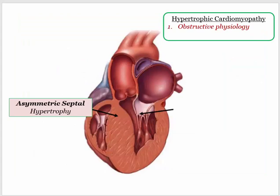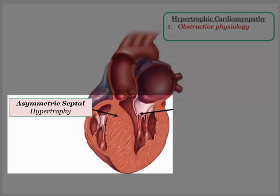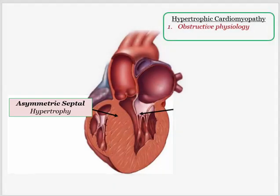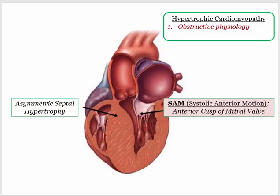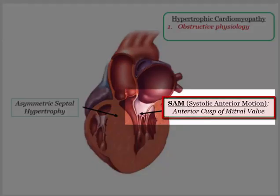We'll be using this graphic throughout the presentation, so let's be sure we understand what we are looking at and the consequence of those findings. The first thing we observe is the asymmetry of the septum — it is disproportionately enlarged compared with the LV free wall. It is hypertrophic, and this is the sentinel finding that contributes to the outflow obstruction. The arrow is pointing to the anterior leaflet of the mitral valve. In patients with hypertrophic cardiomyopathy, anterior motion of the mitral cusp during systole contributes to the outflow gradient.